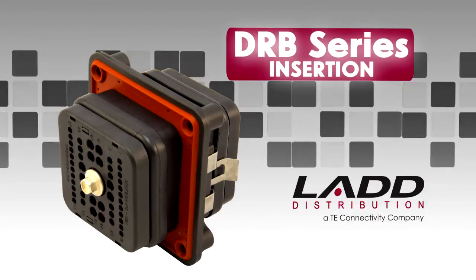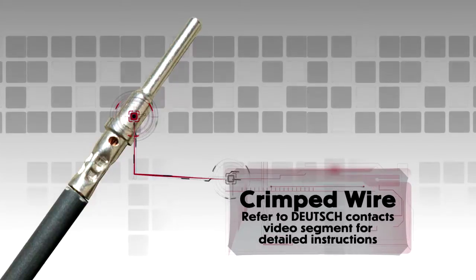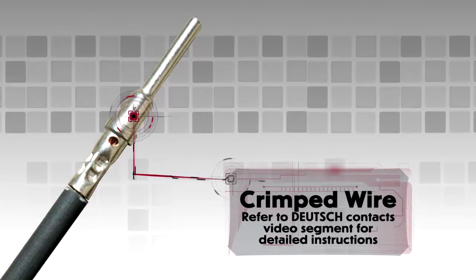DRB Insertion. Begin with a crimped wire. For assistance, refer to the Deutsch Contacts video segment for detailed instructions.